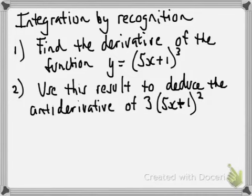OK, so this is a topic called integration by recognition. This question says, find the derivative of the function y equals 5x plus 1 to the power 3. And then we're going to use that result to introduce the antiderivative of that guy there, 3 outside of 5x plus 1 squared.